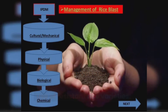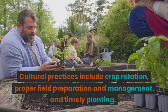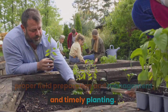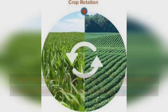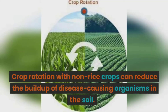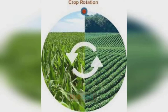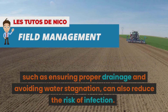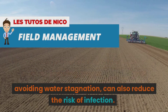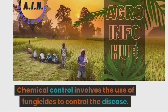Effective management of rice blast disease involves a combination of cultural practices, chemical control, and the use of resistant rice varieties. Cultural practices include crop rotation, proper field preparation and management, and timely planting. Crop rotation with non-rice crops can reduce the buildup of disease-causing organisms in the soil. Proper field preparation, such as ensuring proper drainage and avoiding water stagnation, can also reduce the risk of infection.